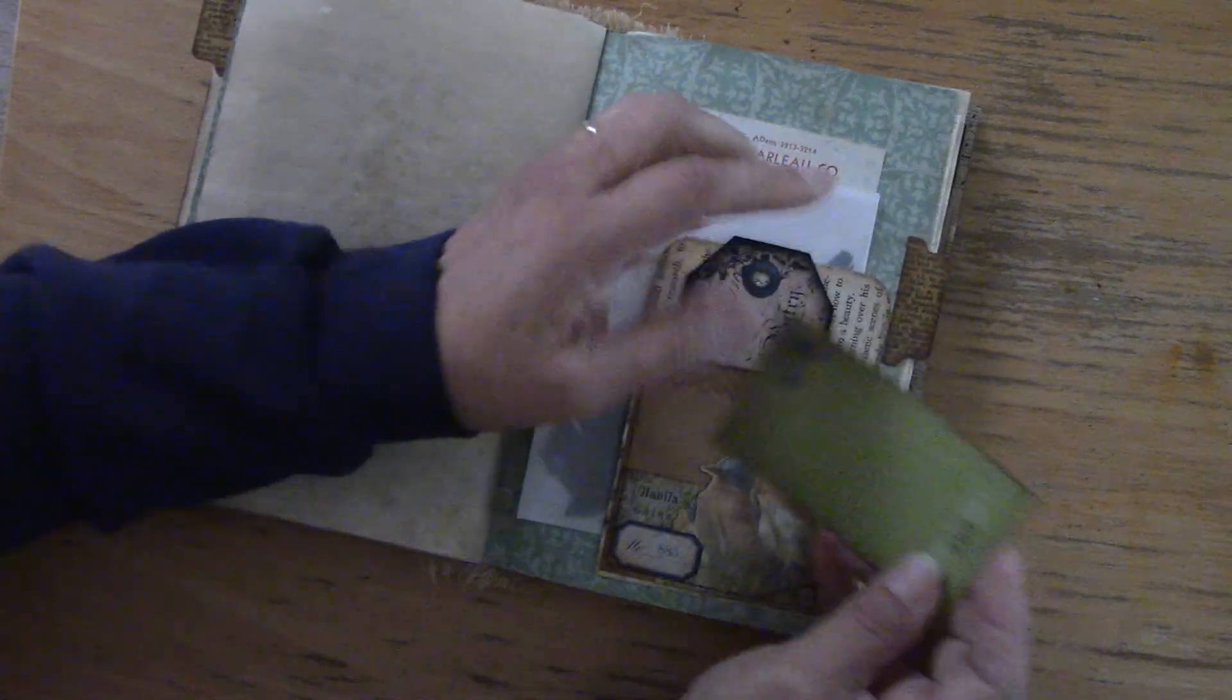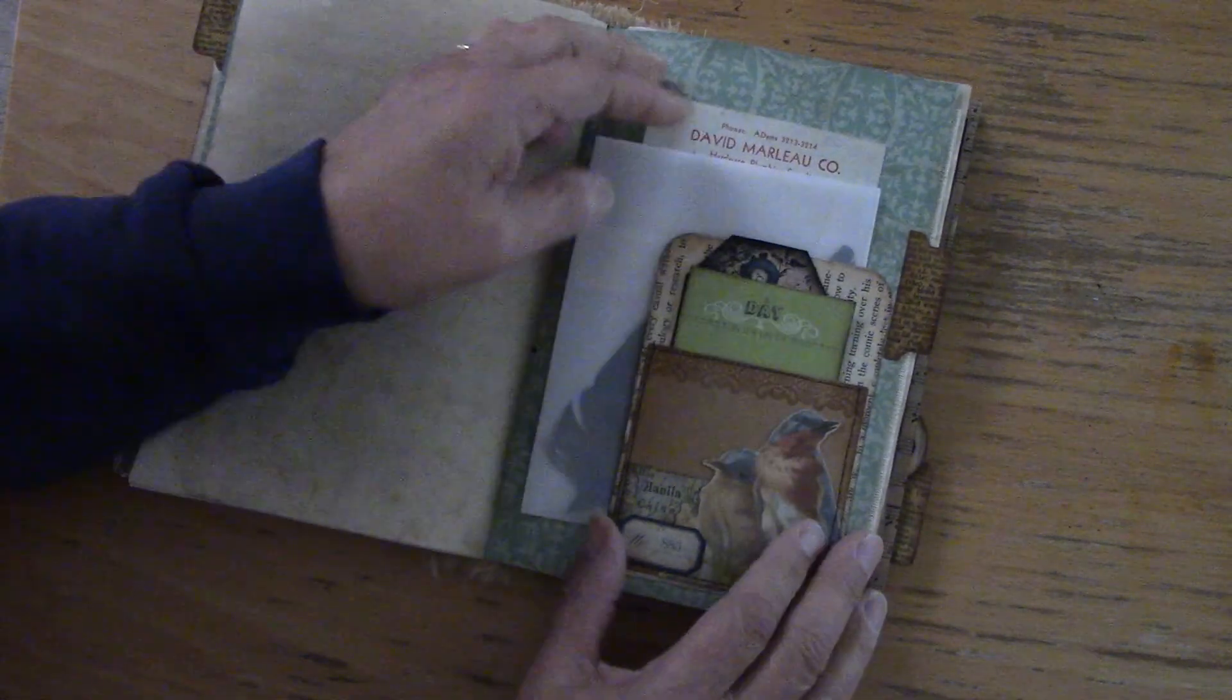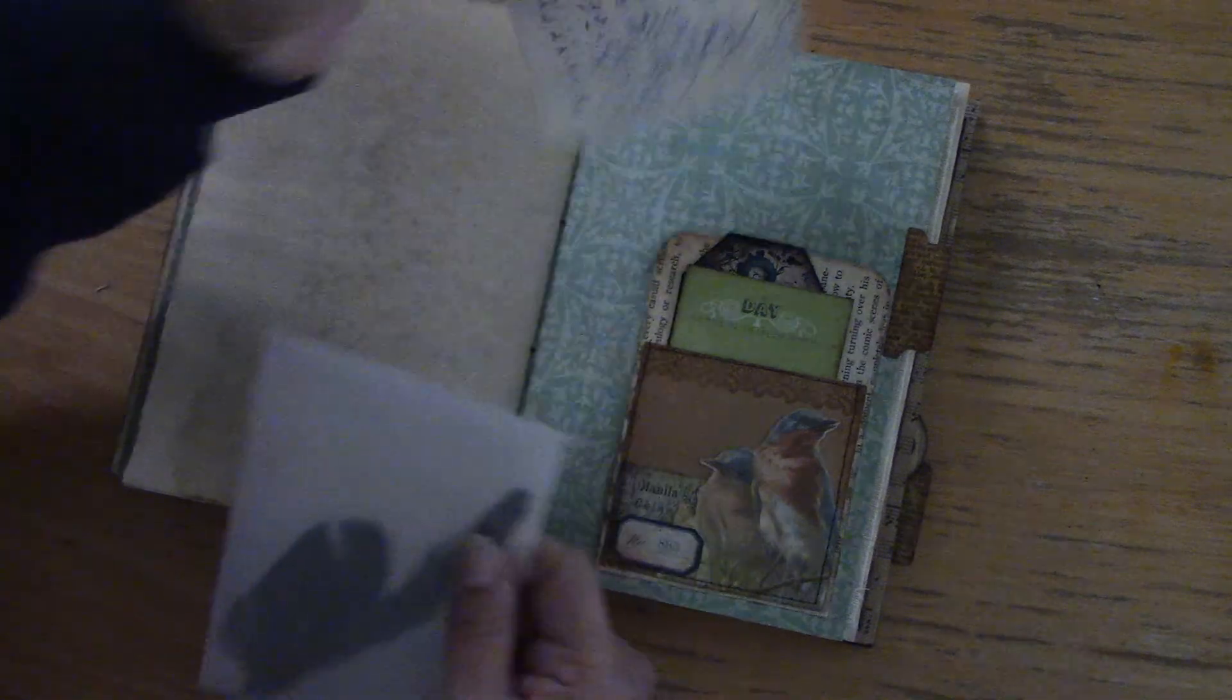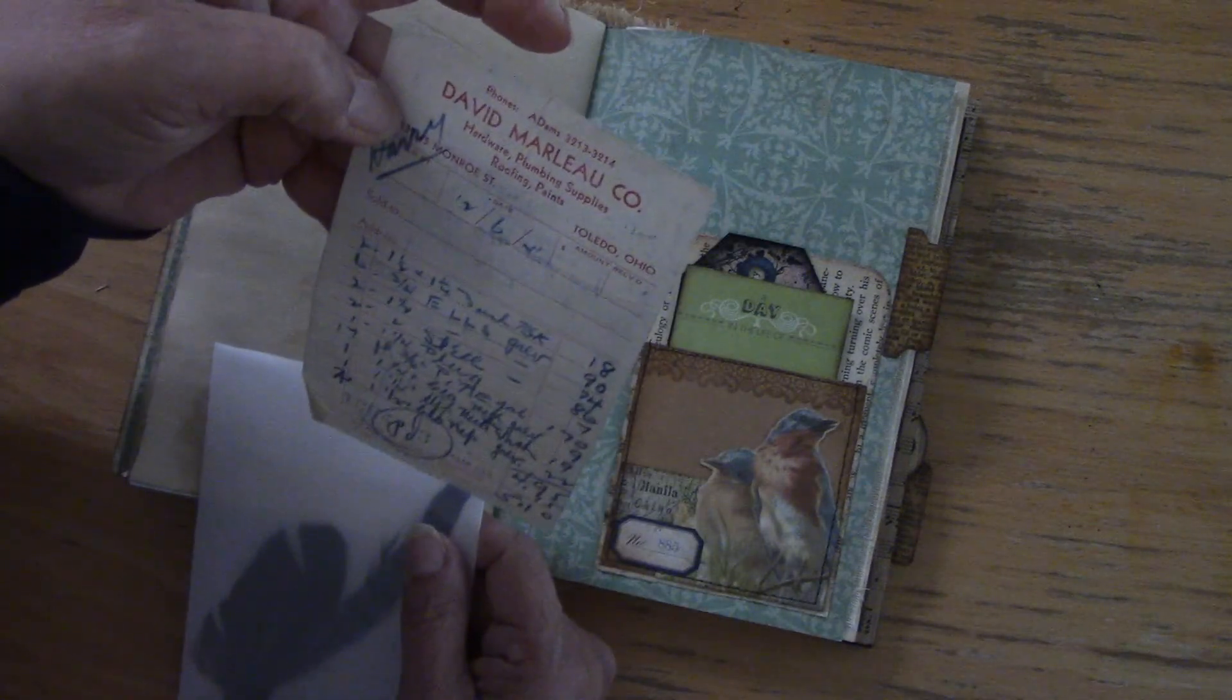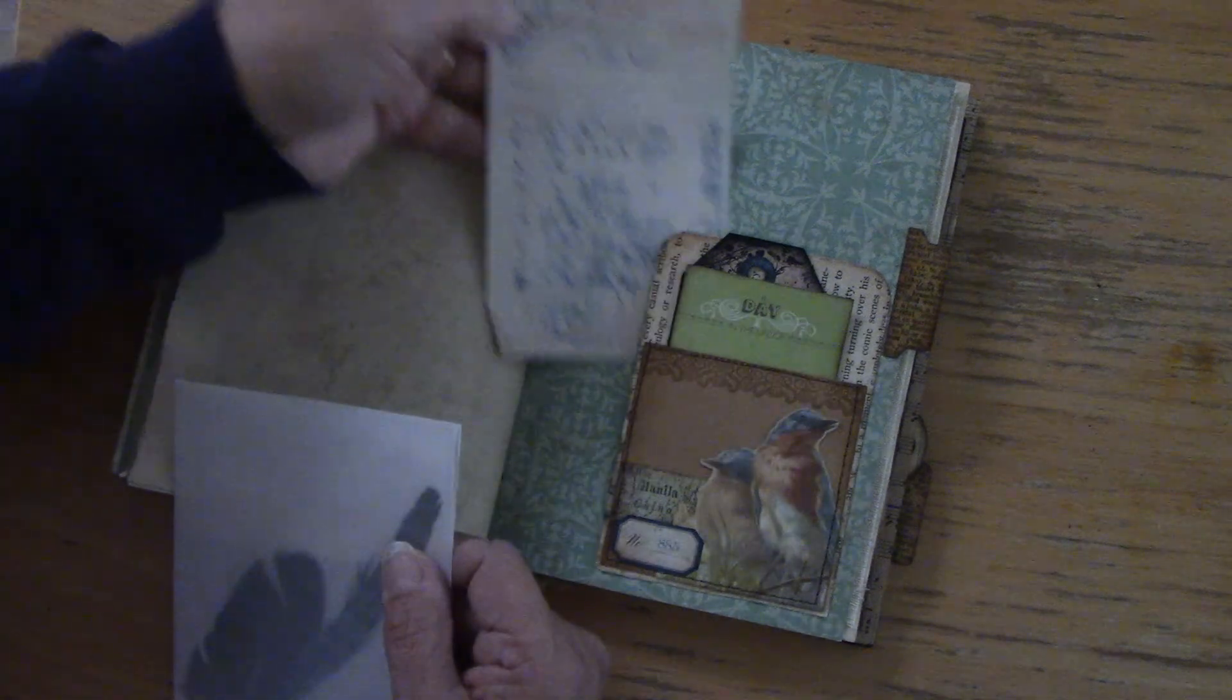It gives you an idea of just some of the things that you can tuck in. And behind this pocket, I have two items. I have an old receipt from a hardware plumbing supply store and it looks like it's dated 1941.